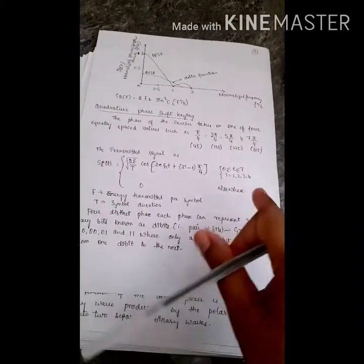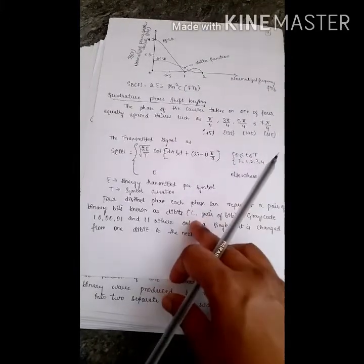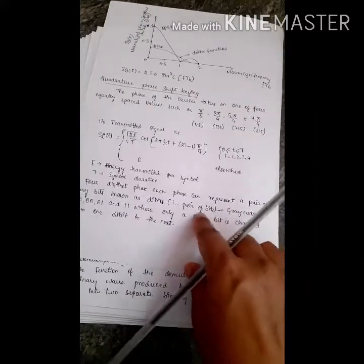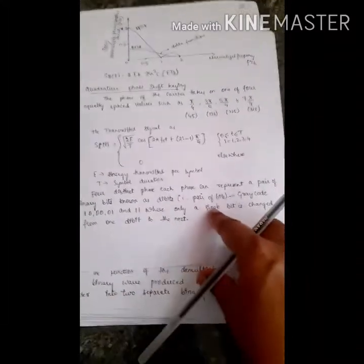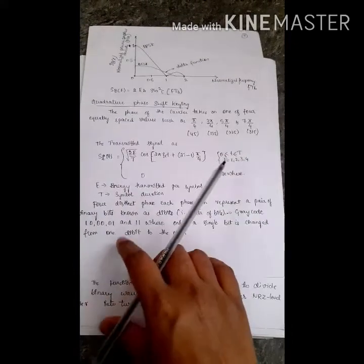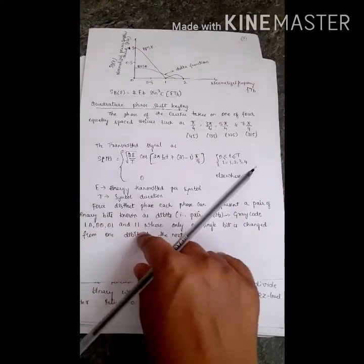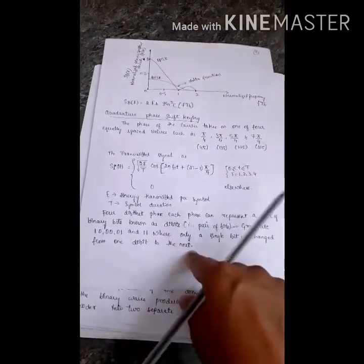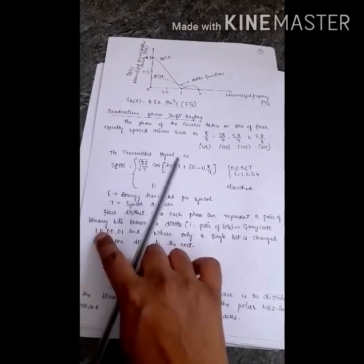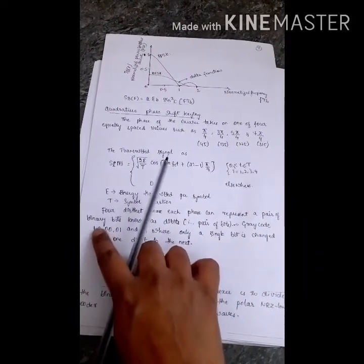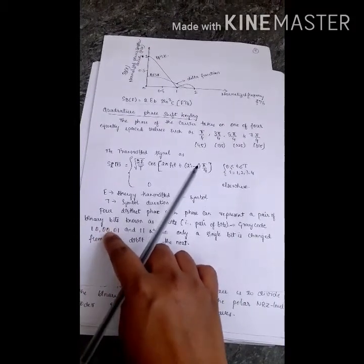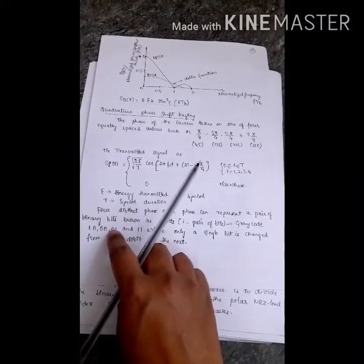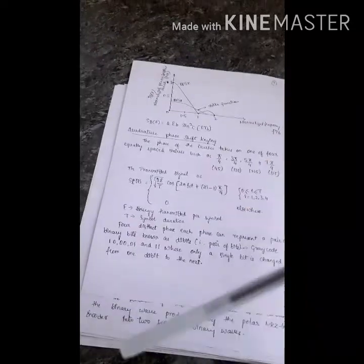The four distinct phases each represent a binary pair known as dibits in QPSK. We are considering pairs of bits and using Gray code, where the Gray code values are: 10, 00, 01, and 11. In Gray code, only a single bit changes from one codeword to the next — for example, from 10 to 00, only one bit changes.